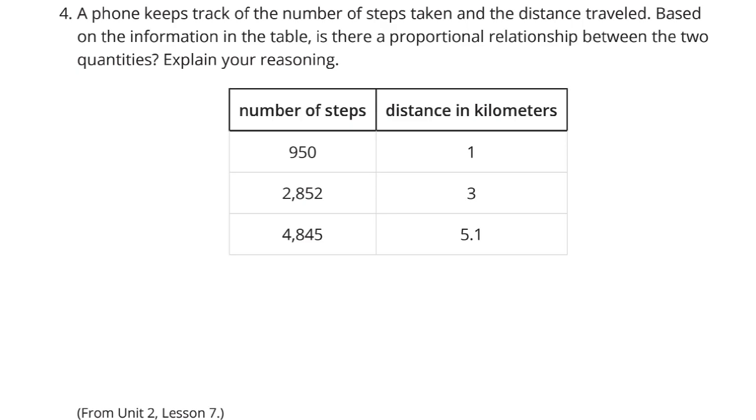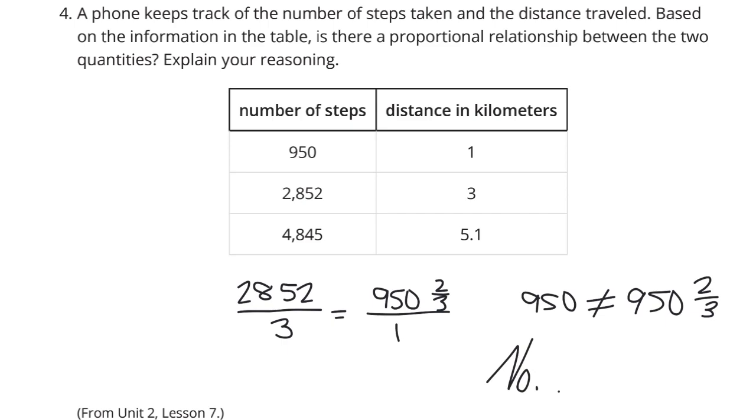Well, if we take a look at 950 and 1, that's 950 steps and 1 kilometer. If we were to take a look at, let's simplify 2,852 and divide it by 3 to see what's the per kilometer distance there. That ends up being 950 and 2 thirds. Well, as close as it is, 950 is not equal to 950 and 2 thirds. So, no, it's not proportional.